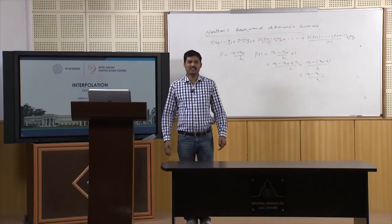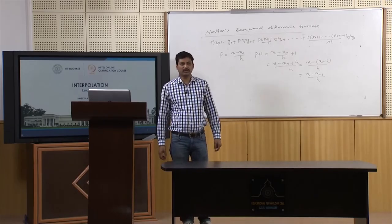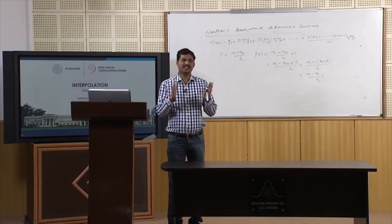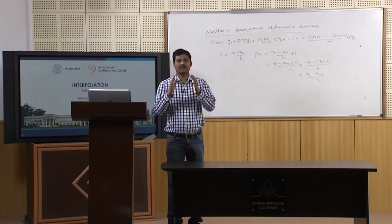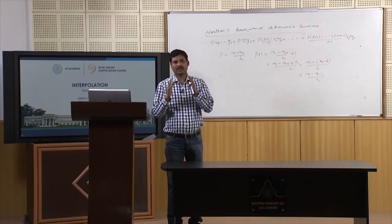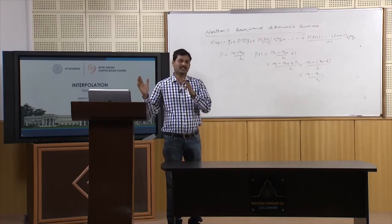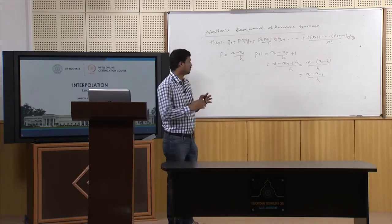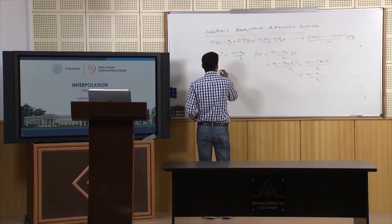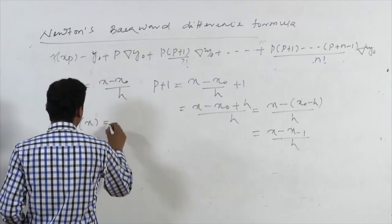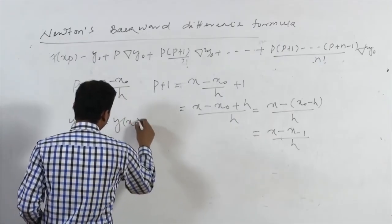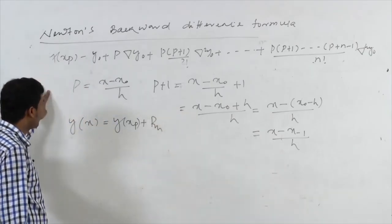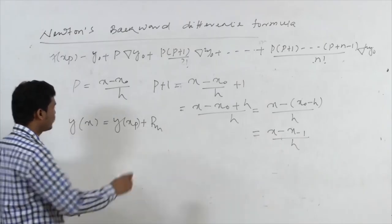Whenever we discuss Newton's forward or backward difference formulas, there is always an associated error term. Since we write a series expansion and end at the nth term, there are extra terms that we neglect. Including those terms, the complete series expansion is Y(x) = Y(xp) + Rn, the remainder term. Each of Newton's forward and backward difference formulas always has an associated error.